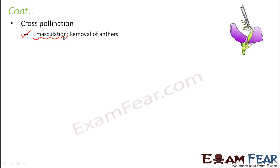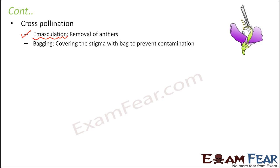Once the anthers were removed, the stigma was covered with a bag to prevent contamination. The stigma is the female part. It was covered with a bag so that no other outside anthers could come and pollinate the plant — so that no other pollen grains could contaminate the stigma. To prevent contamination, it was covered with a bag, and this technique is known as the bagging technique. After that, cross-pollination was done with the desired pollen grains.